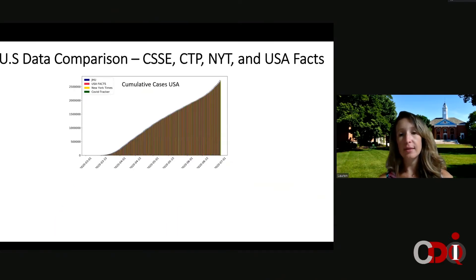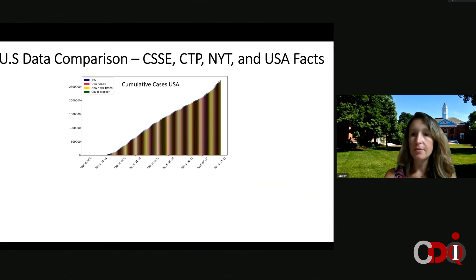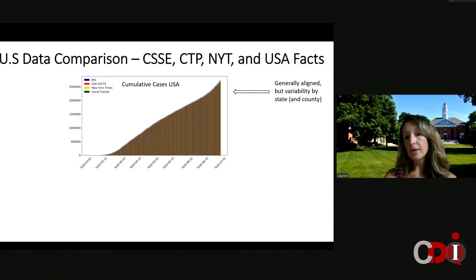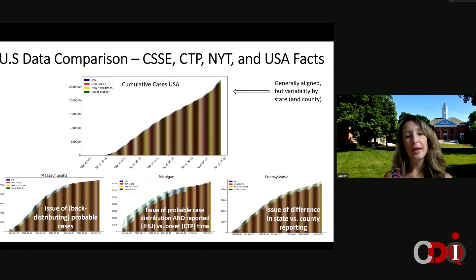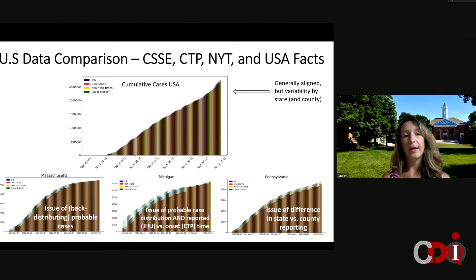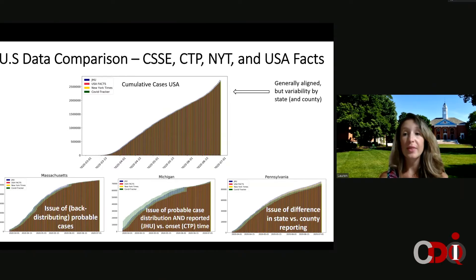Similarly, we compare data at the US level broken down by state and even by county. For that we compare against USA Facts data, New York Times data, and the COVID Tracking Project — two of which track at the county level. Generally these are aligned, but they vary by state and county for different reasons. Sometimes there's a lack of back-distributing probable cases: states will introduce new probable cases and start reporting them at different times starting from April up to now. When they do, we try to get distributions going back and smooth out those curves if the state will provide it. Sometimes it's a difference between reporting onset versus report date of cases and deaths. Generally these line up pretty well; when they don't, we make sure we understand why.